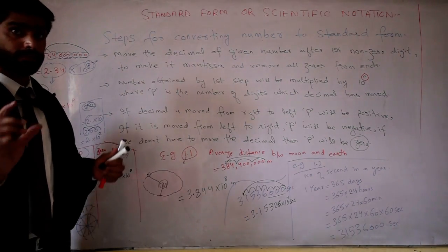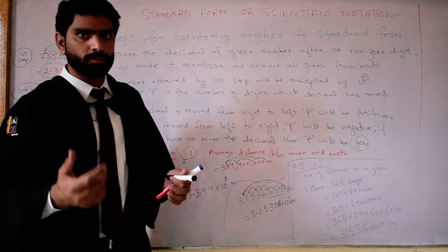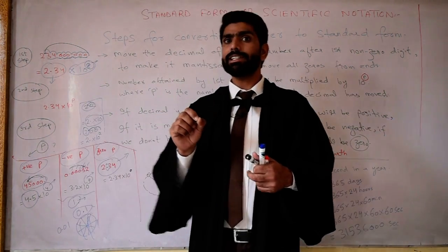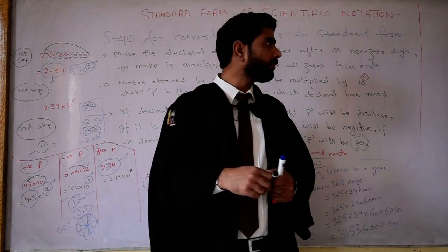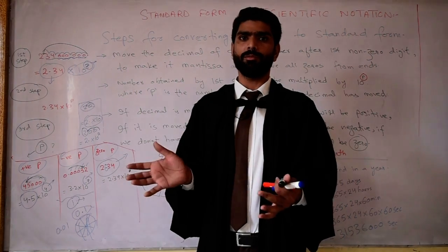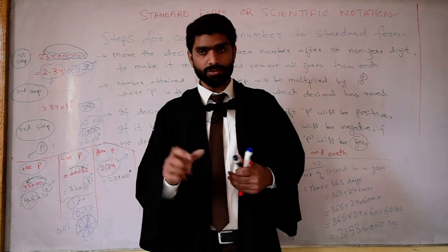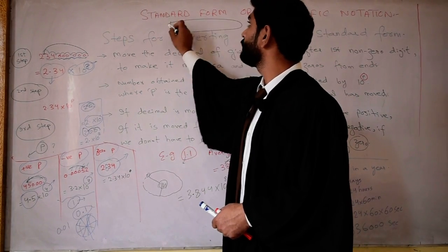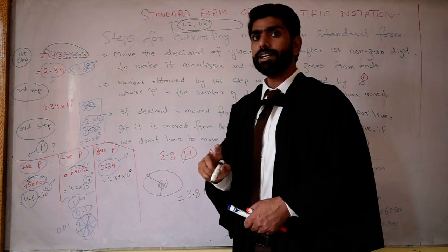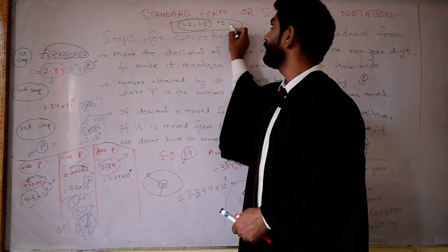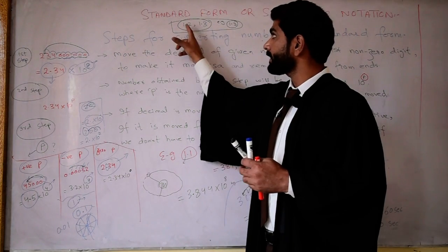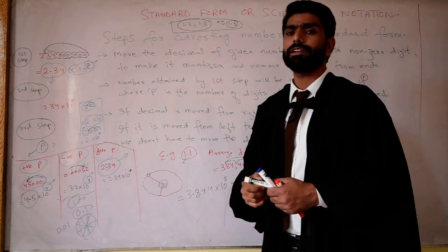This is about the scientific notation — in this way we can write numbers in scientific notation. Your today's assignment is to solve assignment number 1.2 and 1.3, and also example number 1.3. You have to submit these on Google Classroom. Thank you.